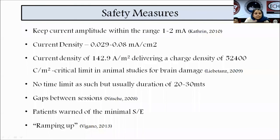Some safety measures to ensure before giving tDCS: current amplitude should be within the range of 1 to 2 mA; current density in the range of 0.029 to 0.08 mA/cm²; current density of 142.9 A/m²; delivering a charge density of 52,400 C/m² is the critical limit in animal studies for brain damage. No strict time limit, but 20 to 30 minutes has shown good positive results. Gaps between sessions are also very important.